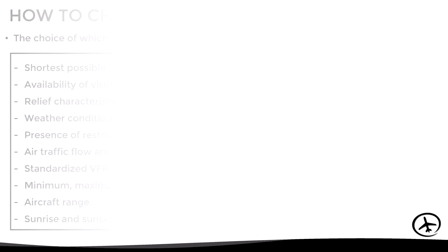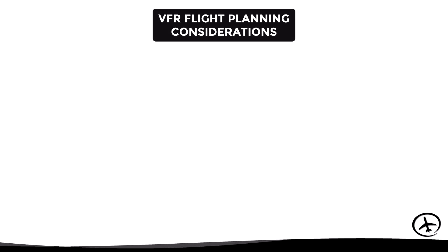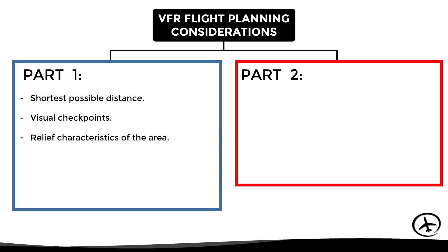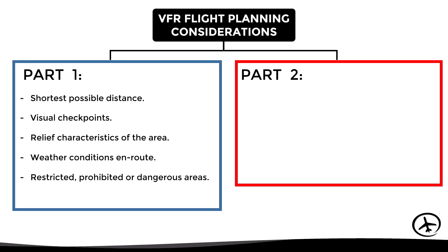Since there are a lot of things to take into account, we will divide this video into two parts. In this first part, we will look at the shortest possible distance, visual checkpoints, relief characteristics, weather conditions, and airspace structures.